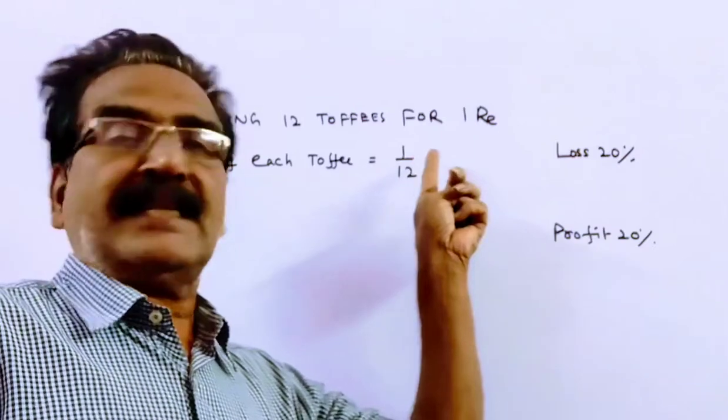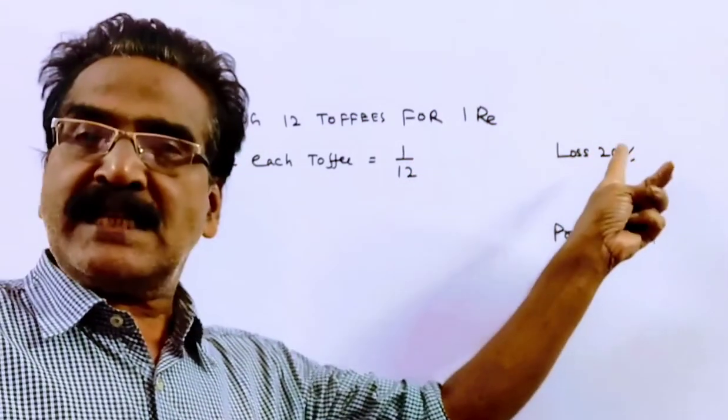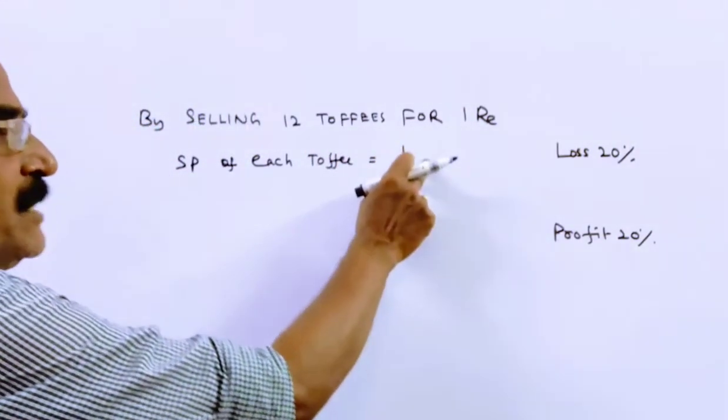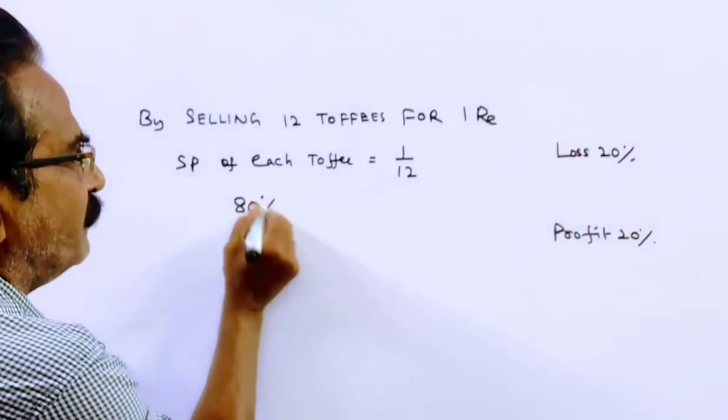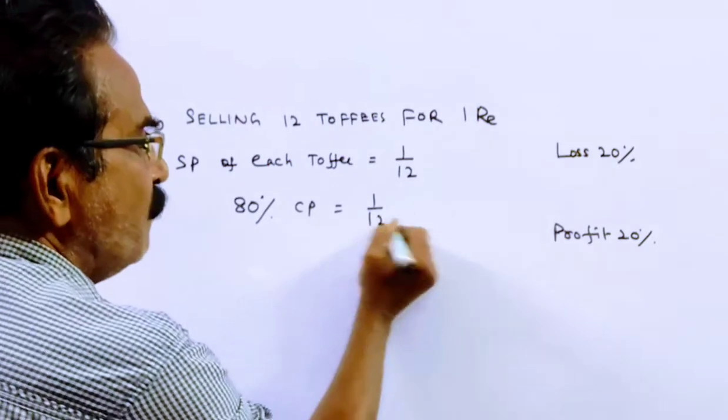Friends, by selling at this price, he loses 20%. That means this selling price 1 by 12 is equal to 80% of the cost price. 80% of the cost price is 1 by 12.